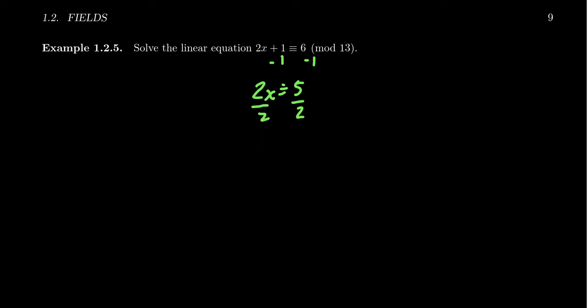We're going to divide both sides by 2 and we get that x is congruent to 5 halves. We have to get a number between 0 and 12 as our final answer. So we need to simplify the modular fraction 5 divided by 2.